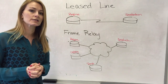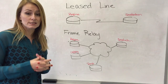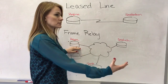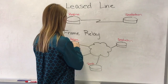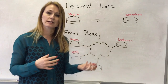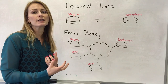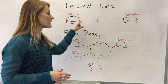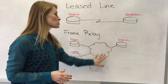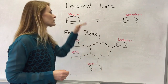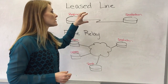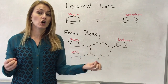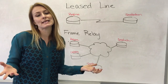The way that Frame Relay works is it still allows you to connect from one distant location to another — so here you've got maybe a Regina office that needs to connect to a Saskatoon office. It still allows for that connection. However, unlike a leased line, it's a shared connection. With a leased line, you have a certain amount of bandwidth dedicated to that connection all the time.